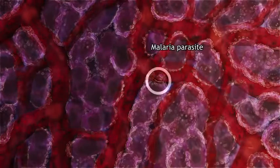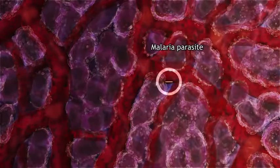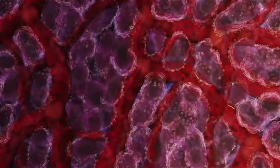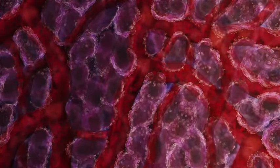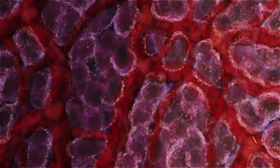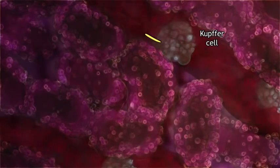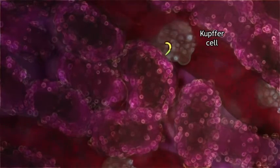Sensing its arrival at the liver, the parasite searches for an exit. A sentinel kupfer cell is the entry point to liver tissue.